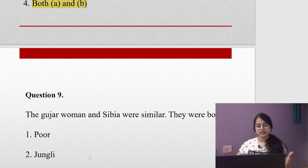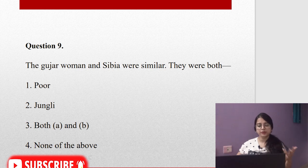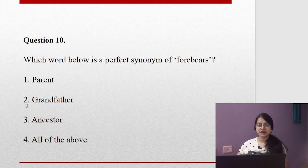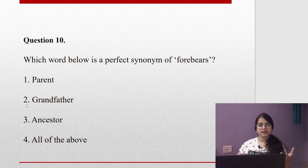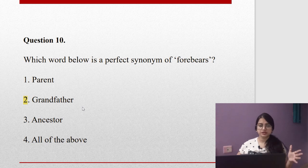Question number nine: The Gujar woman and Sibia were similar. They were both poor, jungly, or both A and B? The similarity between Gujar woman and Sibia is that they are jungly. Question ten: This is a very fast series we are doing because there is limited time for exam and you have to prepare for other examinations. So we will try to finish this off as fast as possible so that you can prepare the next chapter and then we can come up with other MCQs.